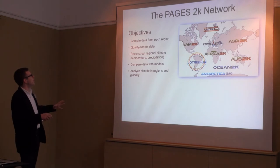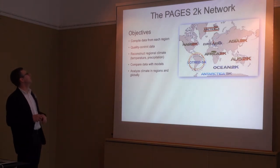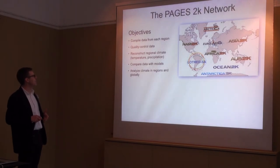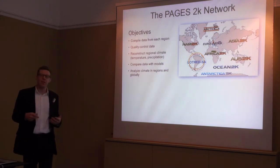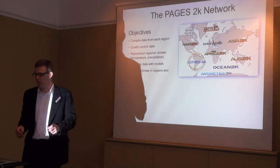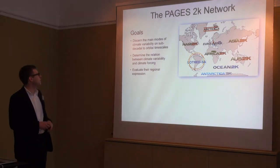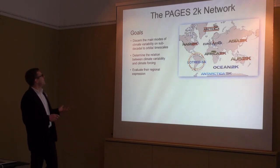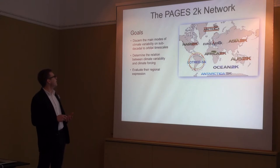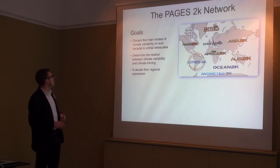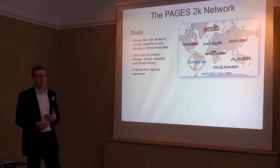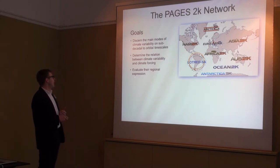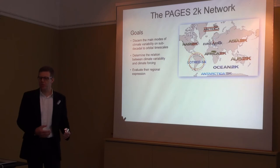The objectives of this whole network are to compile and quality control data, reconstruct regional climate — temperature, precipitation, maybe even pressure fields — compare the data with models, and then analyze climate regionally and globally. Scientific goals include determining the main modes of climate variability from sub-decadal to orbital timescales, determining the relation between climate variability and climate forcing — including the question of how strong the human component to climate change is — and evaluating the regional expression of global change.